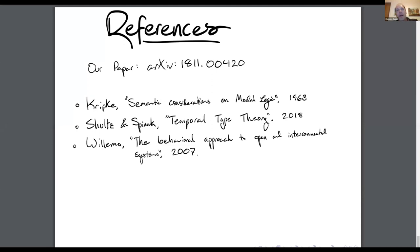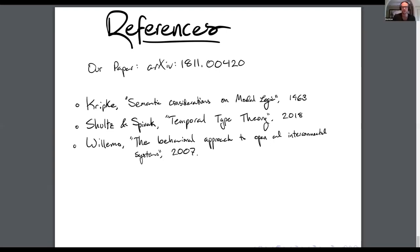Clemens asks: shouldn't the function from behaviors of the whole system to the subsystem be a relation rather than a function? We take the point of view that if you know the whole behavior of the system, that includes the behaviors of its parts, so you can directly and functionally extract the behavior of the part. But yes, you can imagine a situation where it would be just a relation. If you want to do this in any indexed category where re-indexing has left and right adjoints, you totally can do the basic setup at that scale, although not all theorems will remain true.